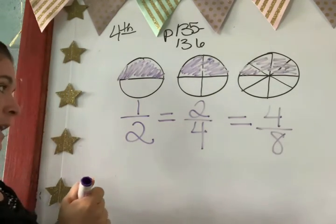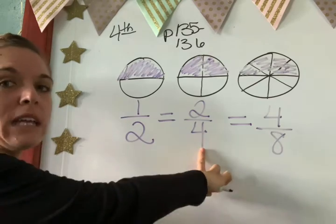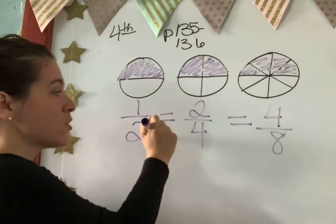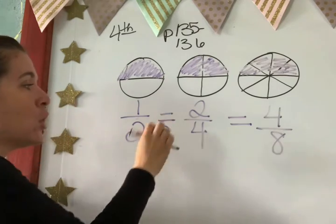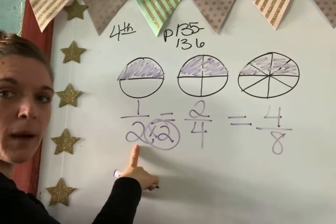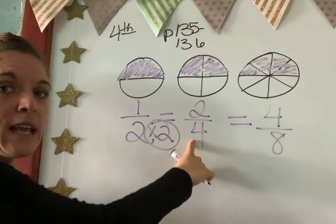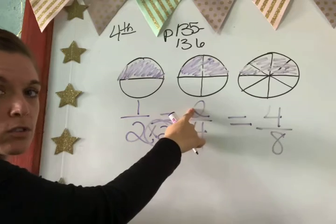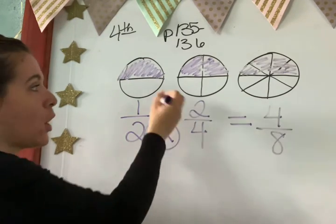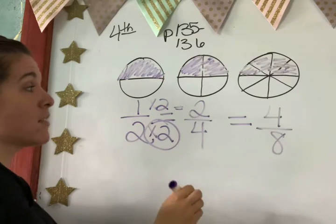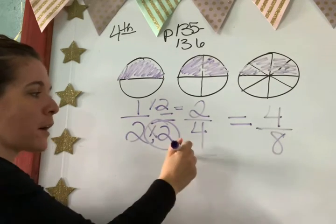Because look, 2 times what number equals 4, Jayla? 2 times 2 equals 4, okay? This number down here that I multiply my denominator by to get this number, if I can multiply the same number up here to get the numerator, son iguales. So if I go 1 times 2, what does that equal? 2. And so it says 1 half and 2 4ths are equal.